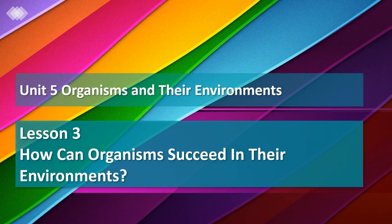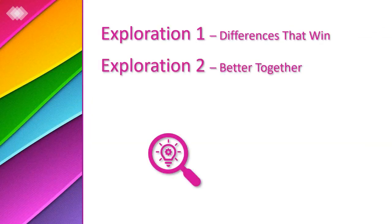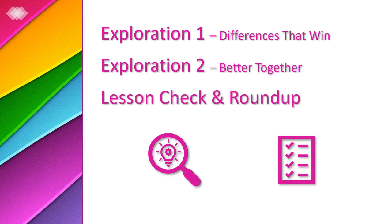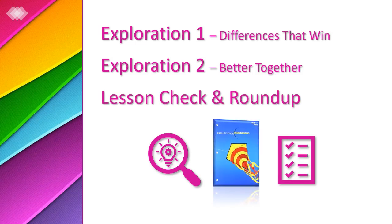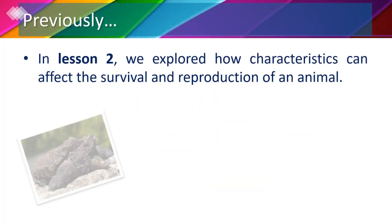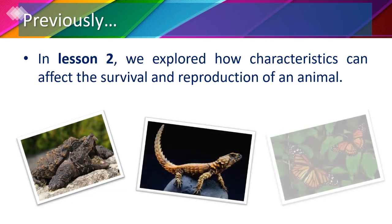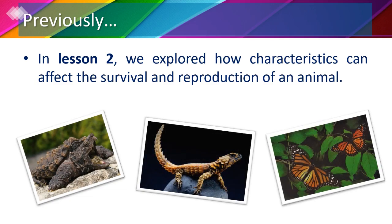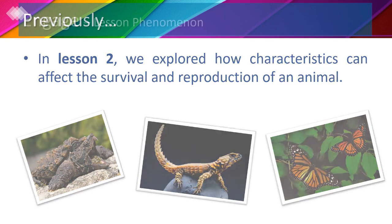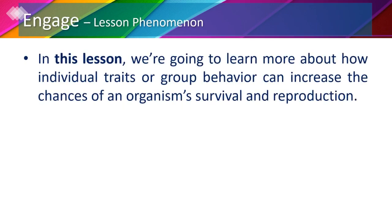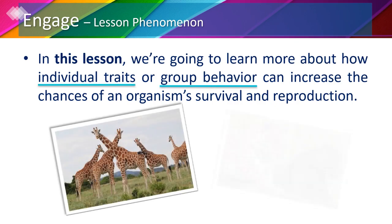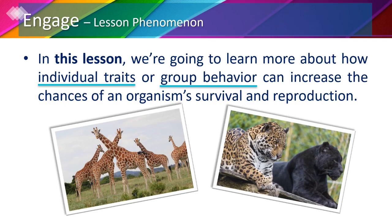Welcome back third graders to our science lessons. In this video we're going to cover lesson 3 in unit 5, then do the lesson check and lesson roundup together. As you watch this video you may follow along in your book. In this lesson we're going to learn more about how individual traits or group behavior can increase the chances of an organism's survival and reproduction.